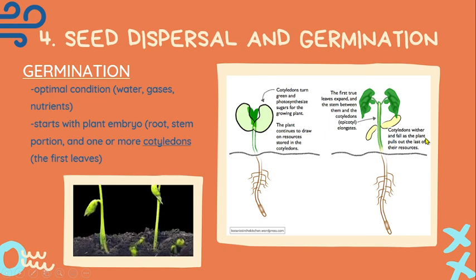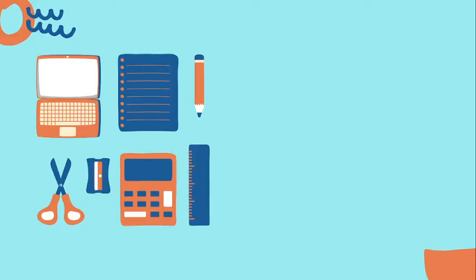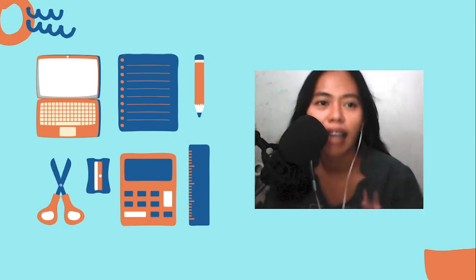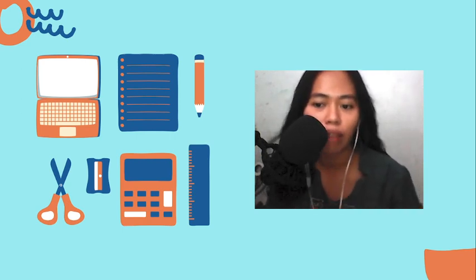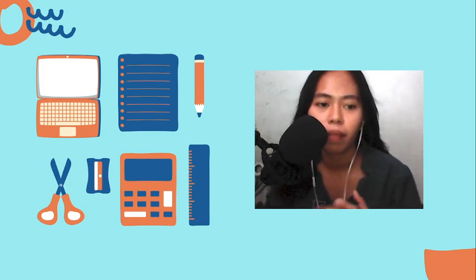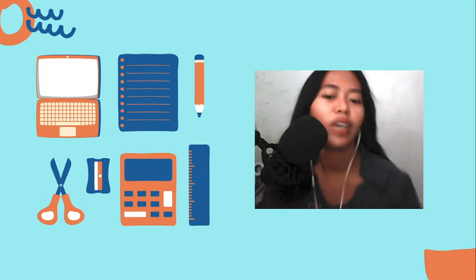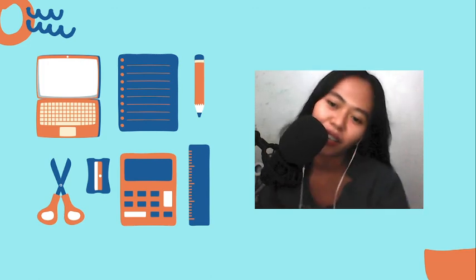Those are the four steps in sexual reproduction in plants. I hope you got that. If there are some parts that are confusing, you can go back to the video and watch it again. If you're still confused, you can ask your teacher. But that's it for the first part. Thank you!